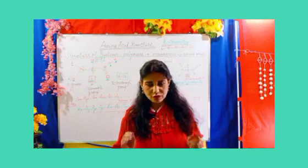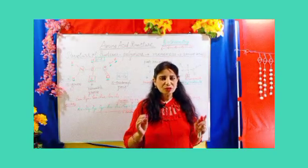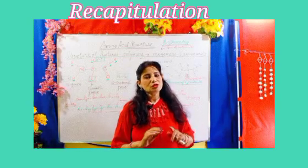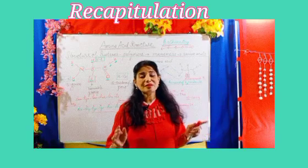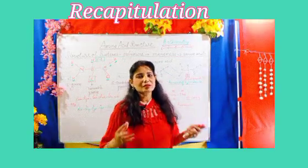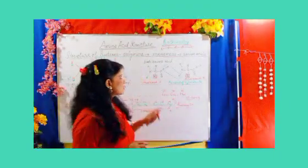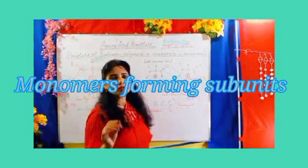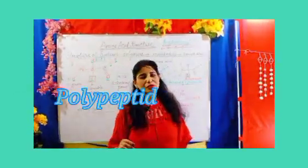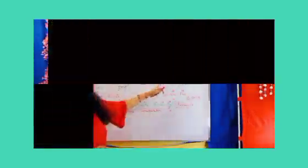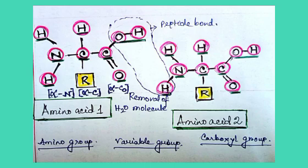Amino acids are the subunits — the monomers — which are linked together to make polymers. This linking creates a polypeptide bond, which is simply a covalent bond. These monomers, when linked together, form polypeptide bonds — a covalent bond established between the carboxylic group of one amino acid and the amino group of another. Here I have tried to show one amino acid where you can see the NH2 group, which is the amino nitrogen group.